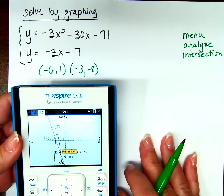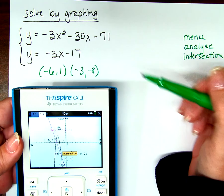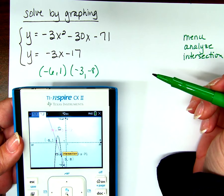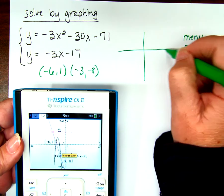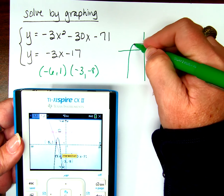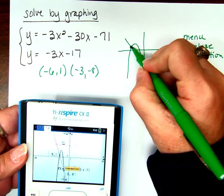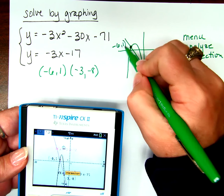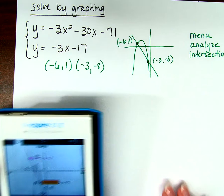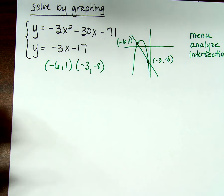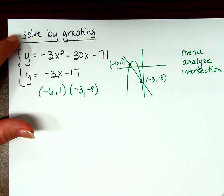So what's the problem — quote unquote — if we're using the graph to solve our system? There's no work, right? So what am I going to do to show work? Let's sketch the graph. Am I expecting perfection when you sketch your graph? No. But I do want to label negative 6, 1 and negative 3, negative 8. That's what I want from you on your homework. Any questions solving a system of nonlinear equations by graphing?